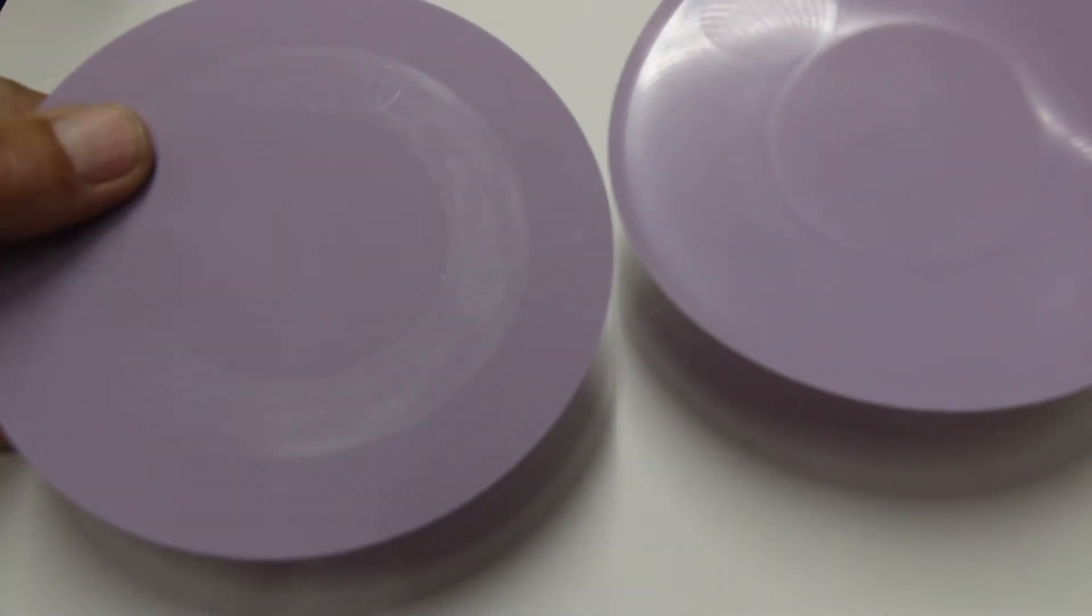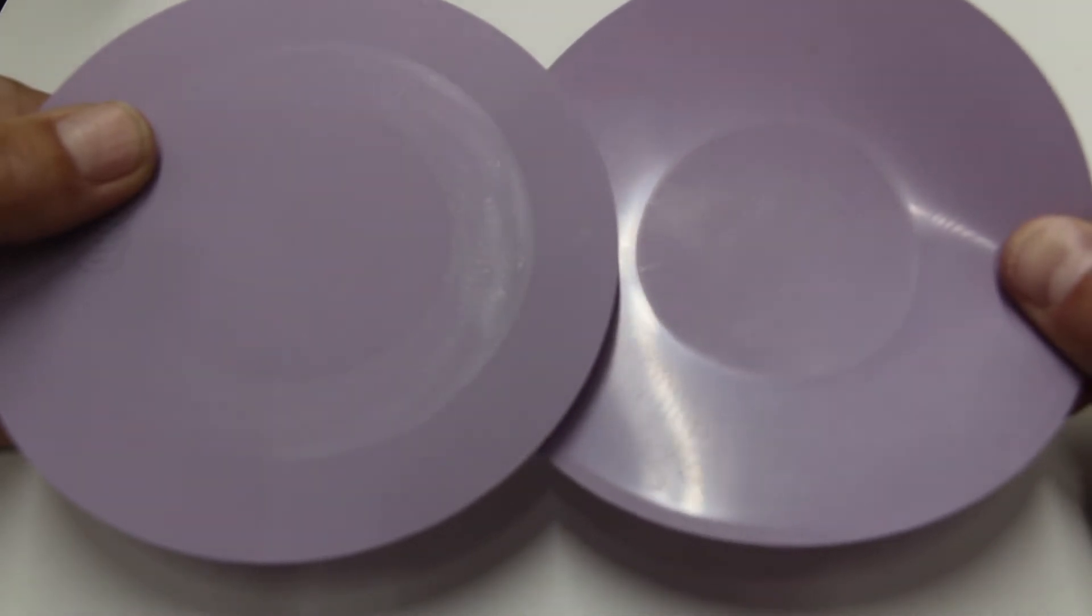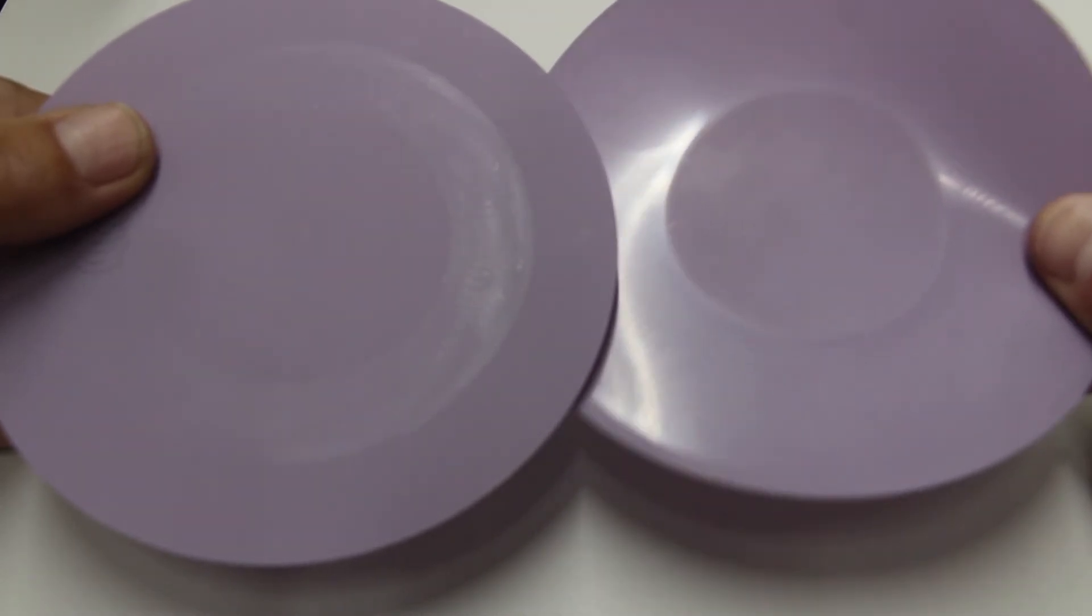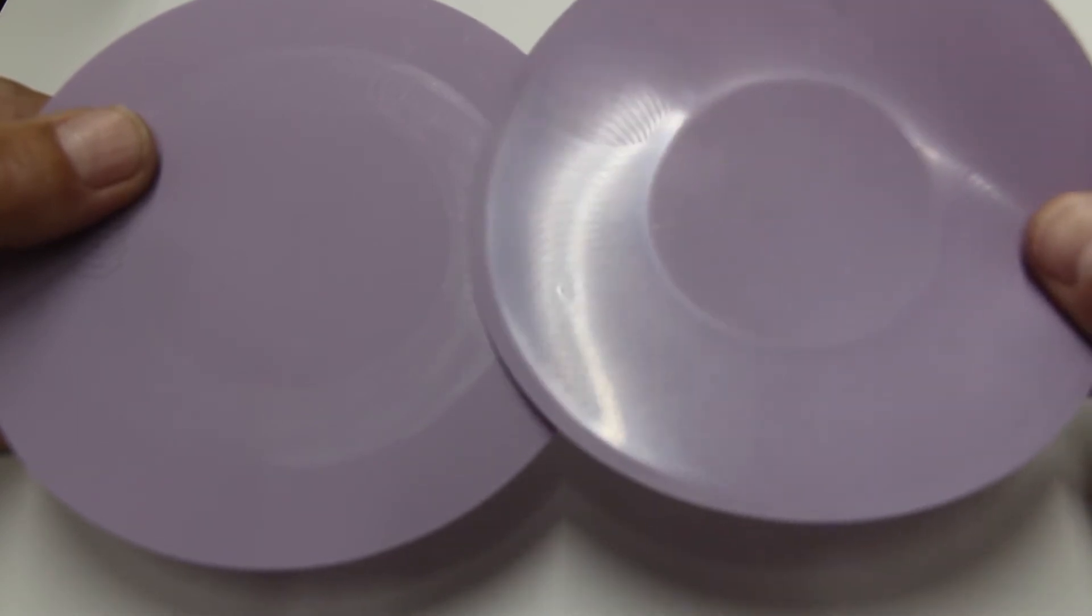No other polisher makes such efficient use of the lapping film. As shown here, the left film has only half the film coverage compared to the right one. Using the abrasive can cut your film cost as much as half year after year.